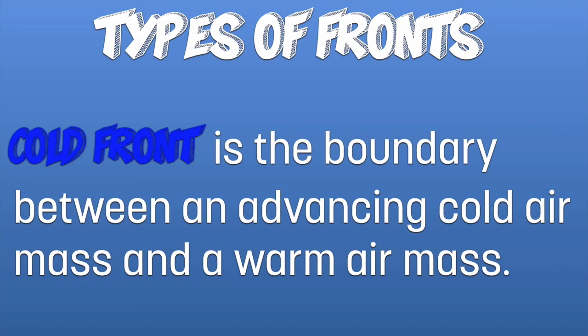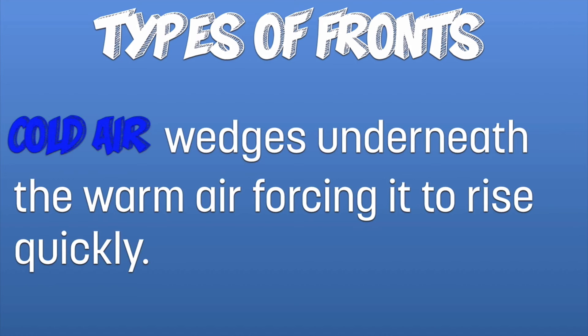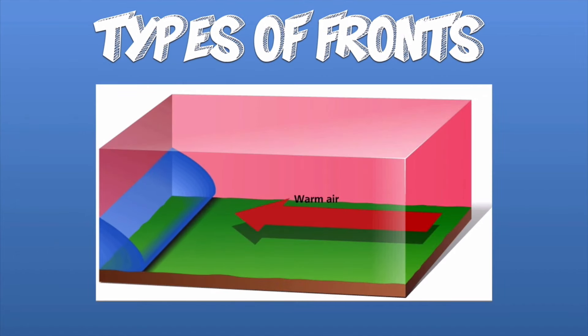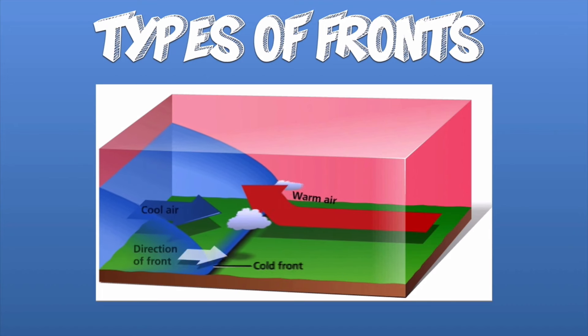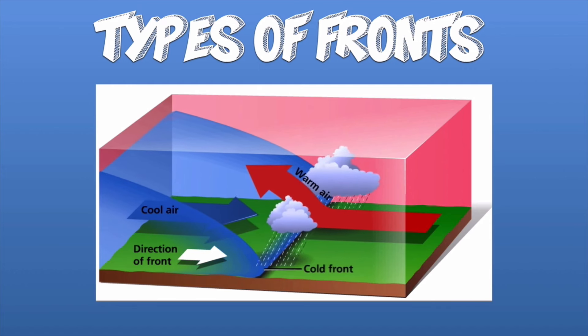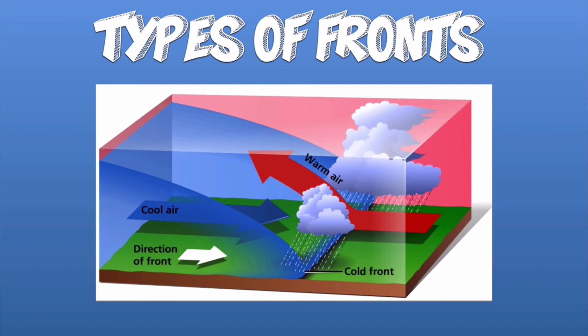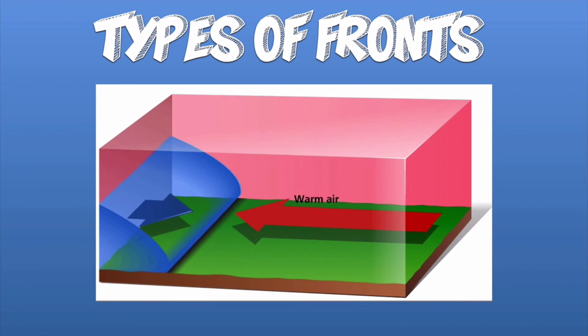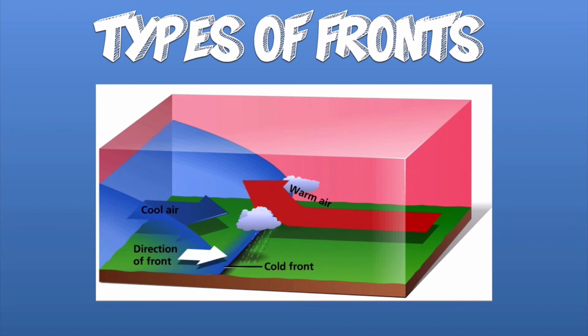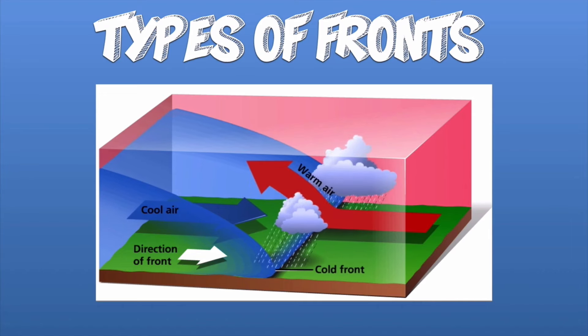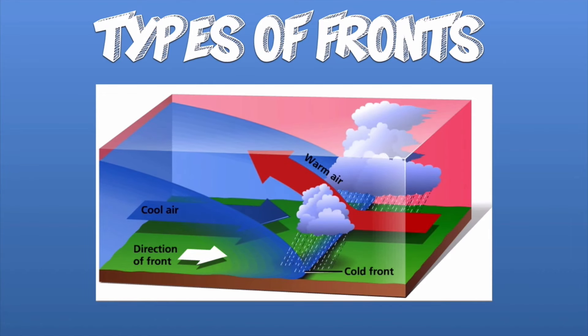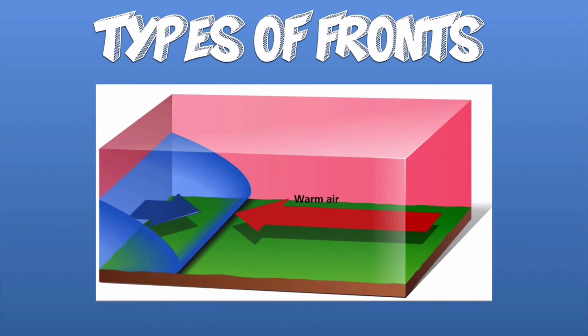Let's look at our first weather front — the cold front. That's the boundary between an advancing cold air mass meeting a warm air mass. When this occurs, the cold air is dense and wedges itself underneath the warm air, forcing it to rise quickly. Here's an animation showing just that: here comes the cold air as a big wedge forcing itself underneath the warm air. The warm air rises rather quickly to create clouds and precipitation. This is called frontal lifting — the cold air pushes the warm air up, forcing it to condense, reach its dew point, and drop precipitation back down onto the surface.